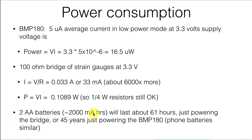Two AA batteries — good for about 2,000 milliamp hours — would last only about 61 hours just powering the Wheatstone bridge alone, not running a microcontroller or anything else. On the other hand, all other things being equal, those same batteries would power the BMP-180 for about 45 years. So the BMP-180 represents a really tiny part of the power consumption in your phone.